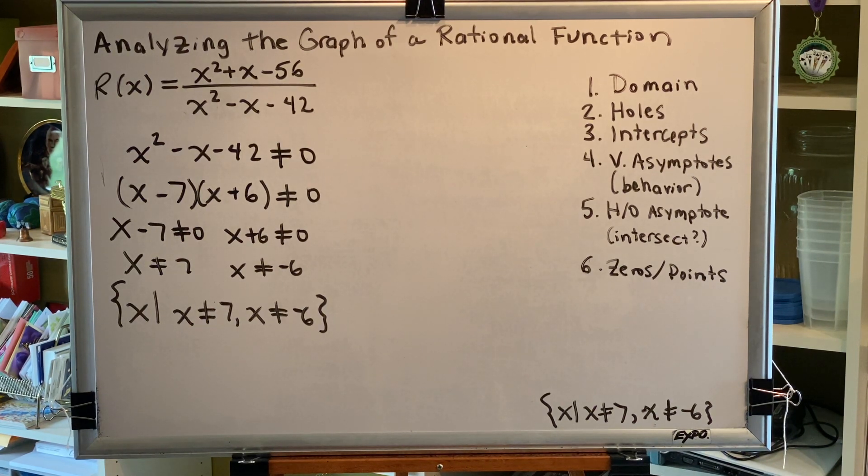For each value of x obtained, we will find the corresponding value of y using the reduced rational expression. Then we can place a hole on the graph for each ordered pair that we've determined.